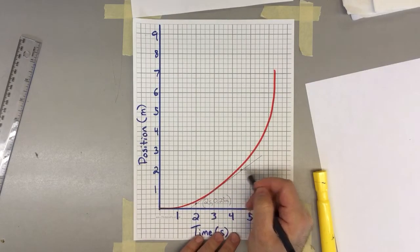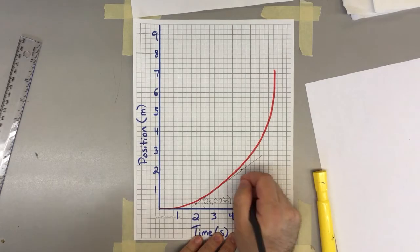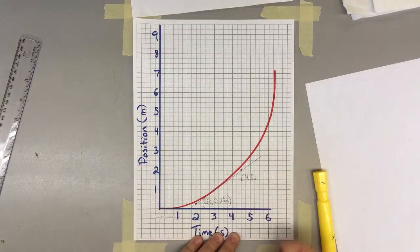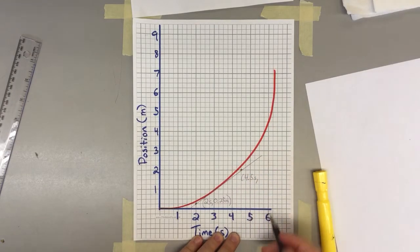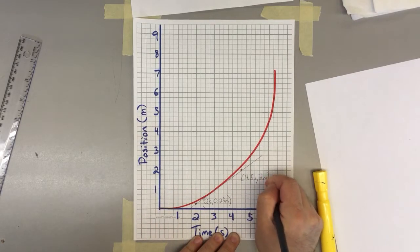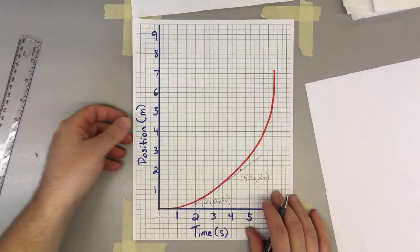Our other point up here, it's exactly halfway between four and five. So this is going to be 4.5 seconds. And we're going to find that that is at position two meters. I'm going to write these on a piece of white paper so it's easier to see.